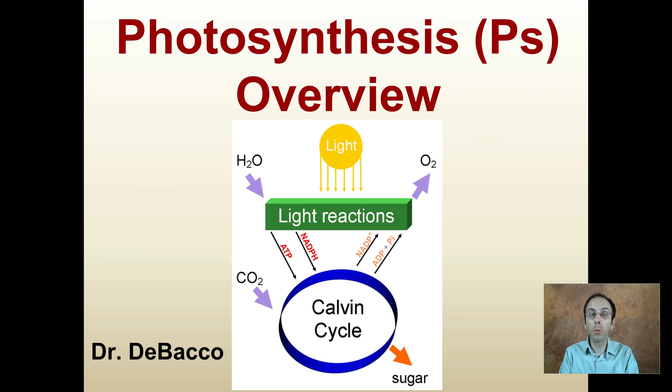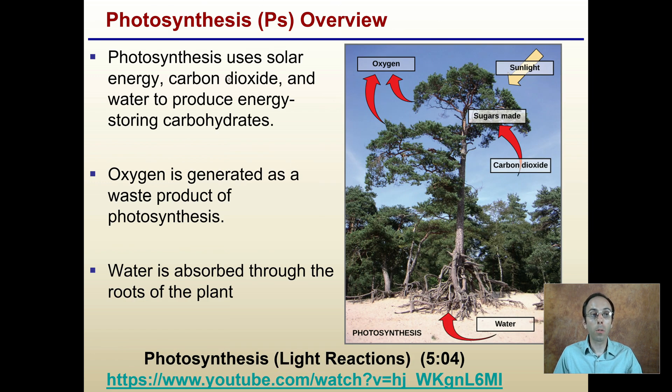Here I'll provide an overview of the photosynthetic process as we see pictured here. It's often abbreviated as Ps, capital P lowercase s. The basic overview is plants taking in solar energy, carbon dioxide, and water to produce energy-storing carbohydrates, typically in the form of sugars.